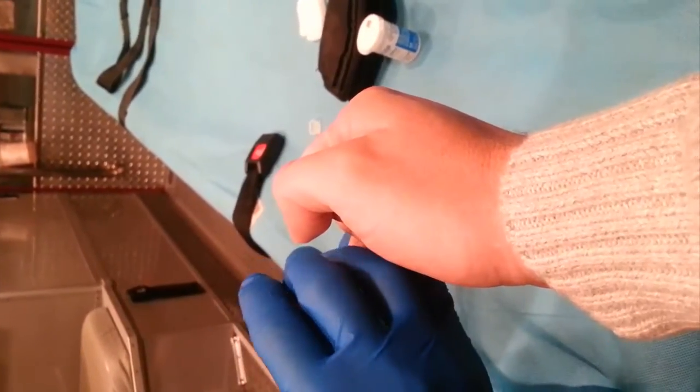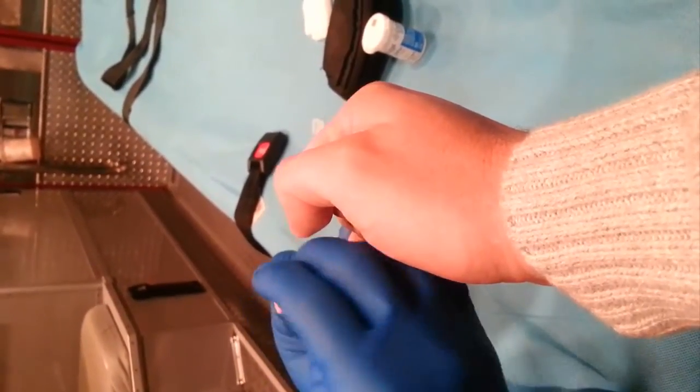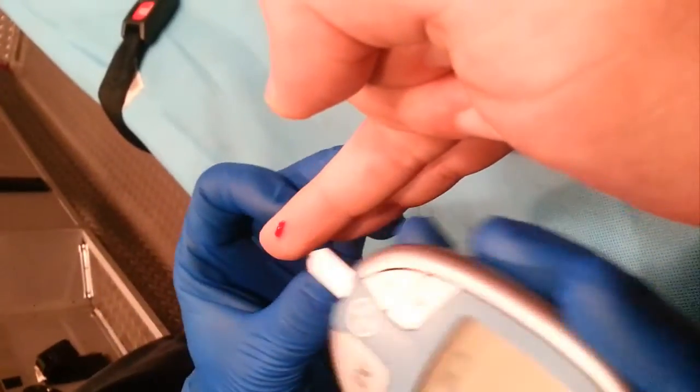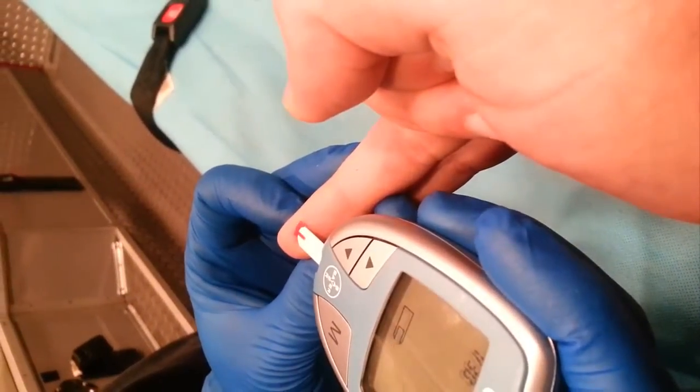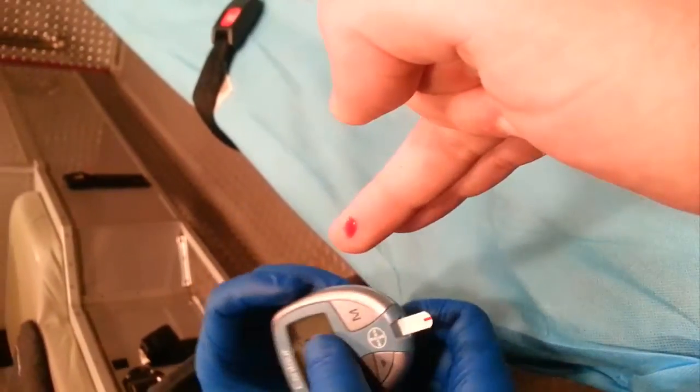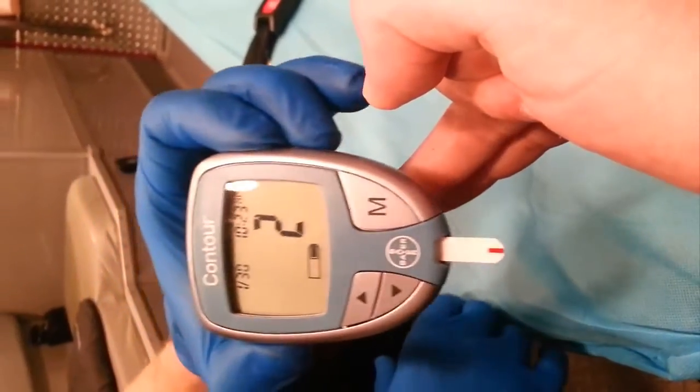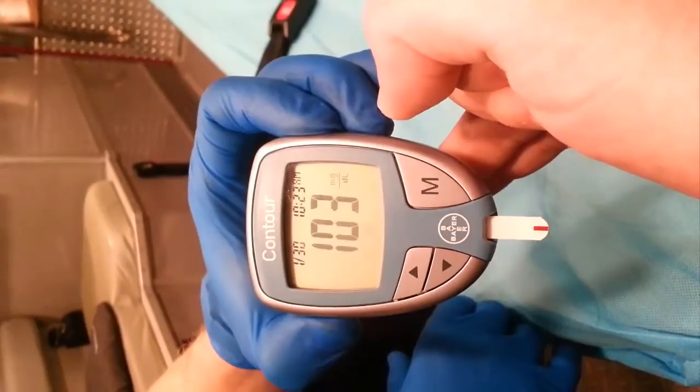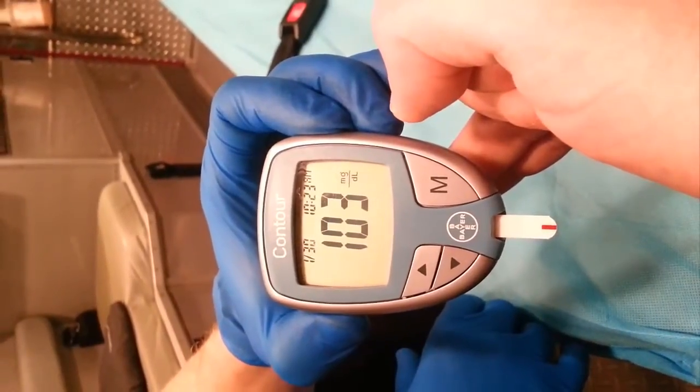So he swabbed for 30 seconds and now we're making the stick. And what we're going to get right here is going to be a dirty stick. That blood is contaminated. We're getting a reading that's going to show the sugar content in my own blood as well as the sugar in the alcohol that was used to prep the site. So we've got a reading of 103.